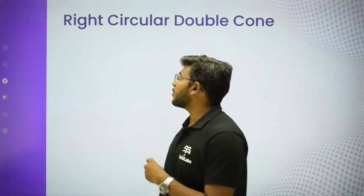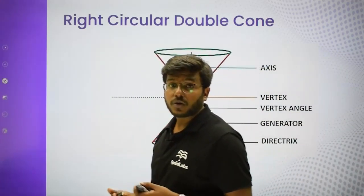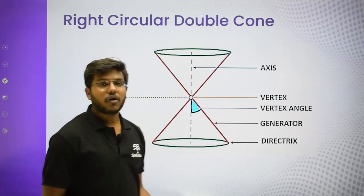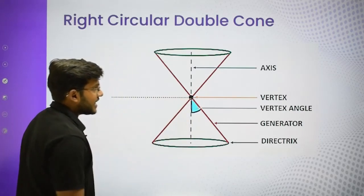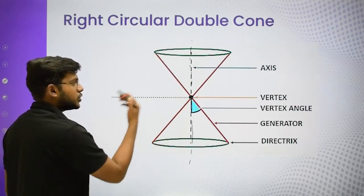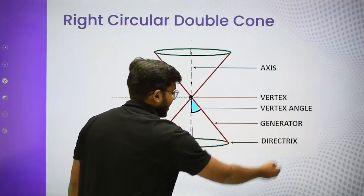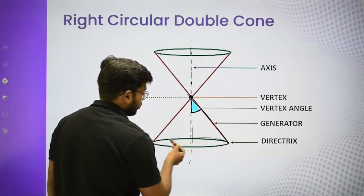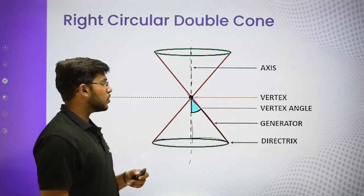What are conic sections? First we need to understand something called a right circular double cone. If you join two cones as a mirror image, that is called a double cone. In this double cone, the tip point is called the vertex. The line about which the cone is symmetric is the axis, which passes through the vertex. The angle at the vertex and the line along the surface is called the generator. The base reference line is called the directrix.